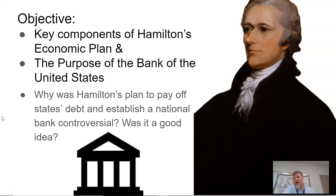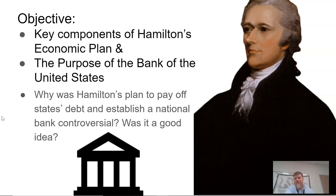The Bank of the United States is going to be a very controversial issue for the next several decades of U.S. history, and so it's going to come back to us time and again. The questions we're thinking about as we learn this are: why was Hamilton's plan to pay off state debts and establish a national bank controversial? Why were people upset about it, and why did some people not like this idea? Do you agree with Hamilton that it was a good idea, or do you agree with his opponents that said it was a bad idea? You're trying to form your own opinion on whether you think it was a good idea or not.